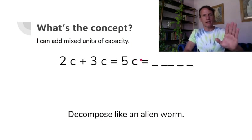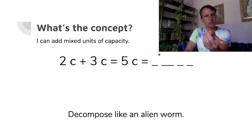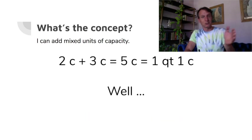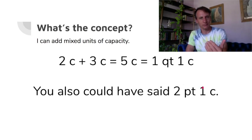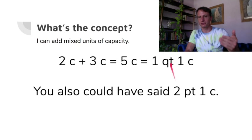Cups: two cups plus three cups is five cups. What can we decompose five cups into? There are two cups in a pint, so that's two pints with one cup left over. But two pints is also one quart, so one quart and one cup. You see how we went from cups, skipped over pints, to quarts. We could also say two pints and one cup — two different valid answers.